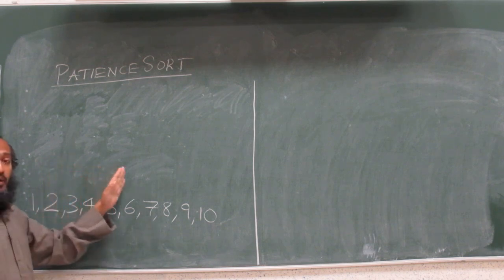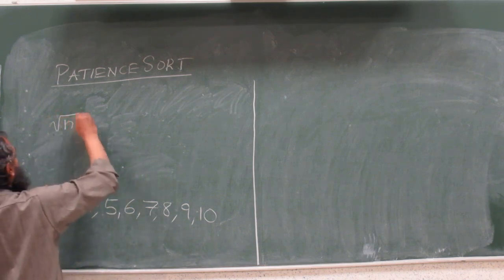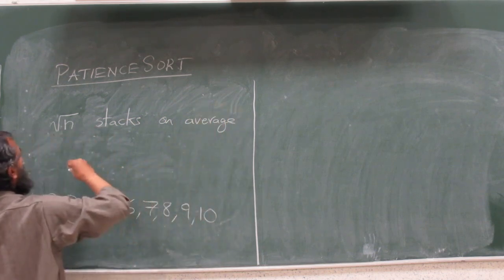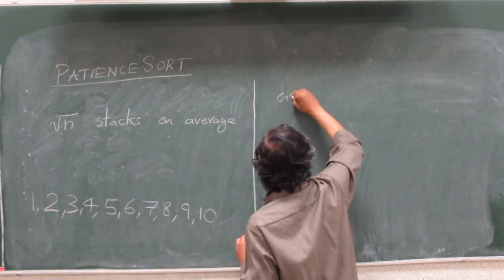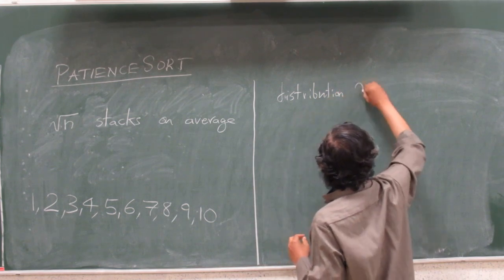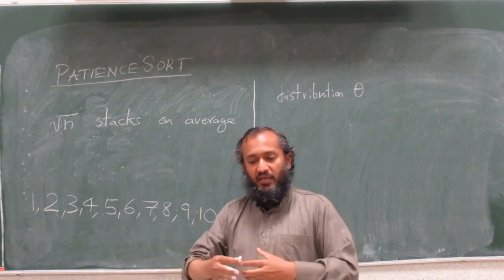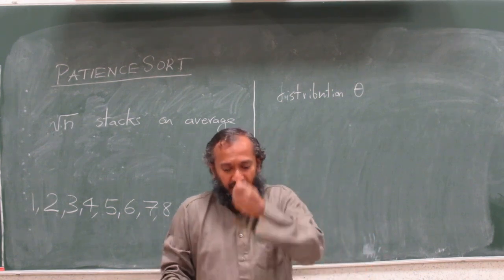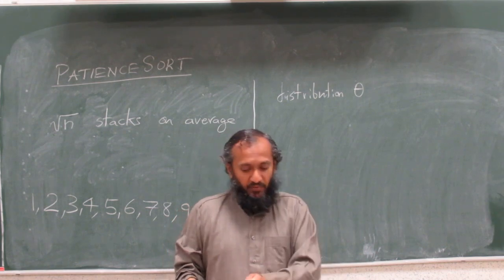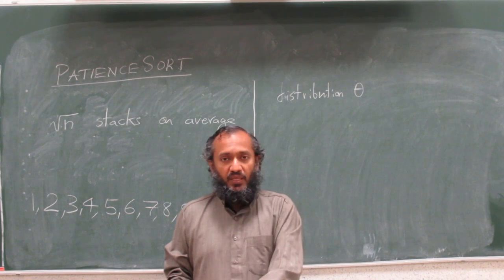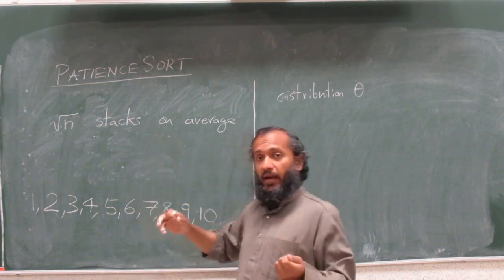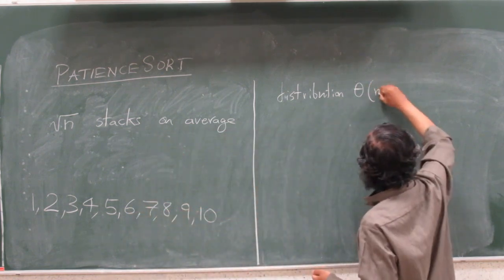One fact mathematically we can prove is that on average the number of stacks will come out to be square root of n stacks on average. So we have distribution. In the middle of this, we have a giant array. In the middle of distribution, let's say we already have square root of n stacks. When we take the next number, on average we have to compare square root of n stacks to find where it can go. So it's square root of n comparison time for each of the n elements, so the distribution is theta of n times square root of n.